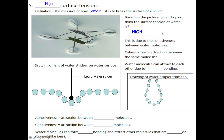What makes water have high surface tension? This is due to the cohesiveness between water molecules. Cohesiveness refers to the attraction between the same molecules. We know that water molecules can attract to each other via hydrogen bonding.